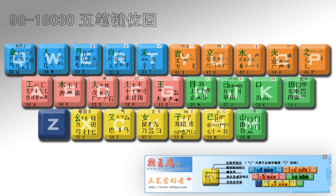Methods under the phonetic category are usually easier to learn but less efficient, resulting in slower typing speeds because they typically require users to choose from a list of phonetically similar characters for input. Methods under the root shape category allow very precise and speedy input but have a difficult learning curve, often requiring a thorough understanding of a character's strokes and composition.